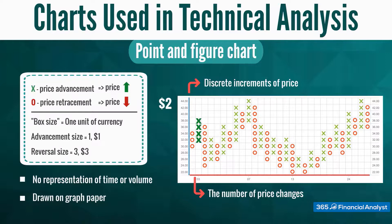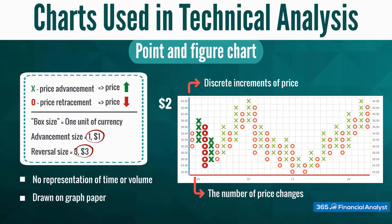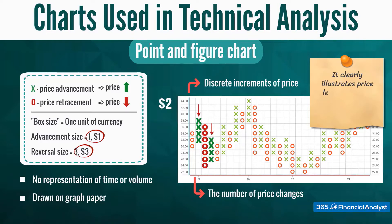The reversal size determines when to create a new column. With a one-dollar box size and a three-dollar reversal, a decline of three dollars or more results in a new column of O's — each filled-in box with an O represents a one-dollar decline. As long as the downtrend continues without a three-dollar price increase, O's are added to the column one below the other. A reversal — an increase of three dollars — would then prompt a new column of X's, and so forth, forming the point and figure chart pattern.